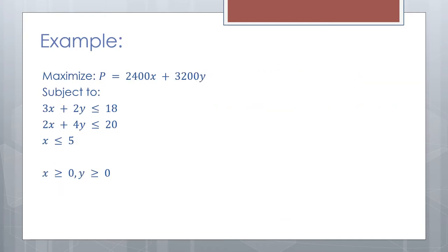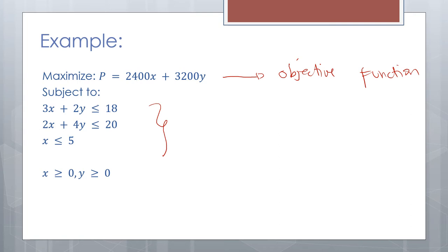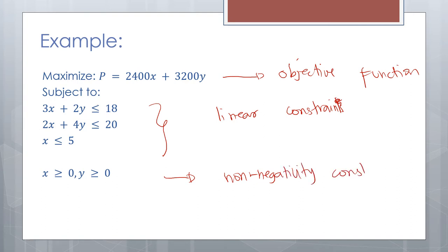Let's have an example. If we are going to maximize P = 2,400x + 3,200y, this is our objective function. The three linear inequalities are our linear constraints. And X ≥ 0 and Y ≥ 0 are our non-negativity constraints.